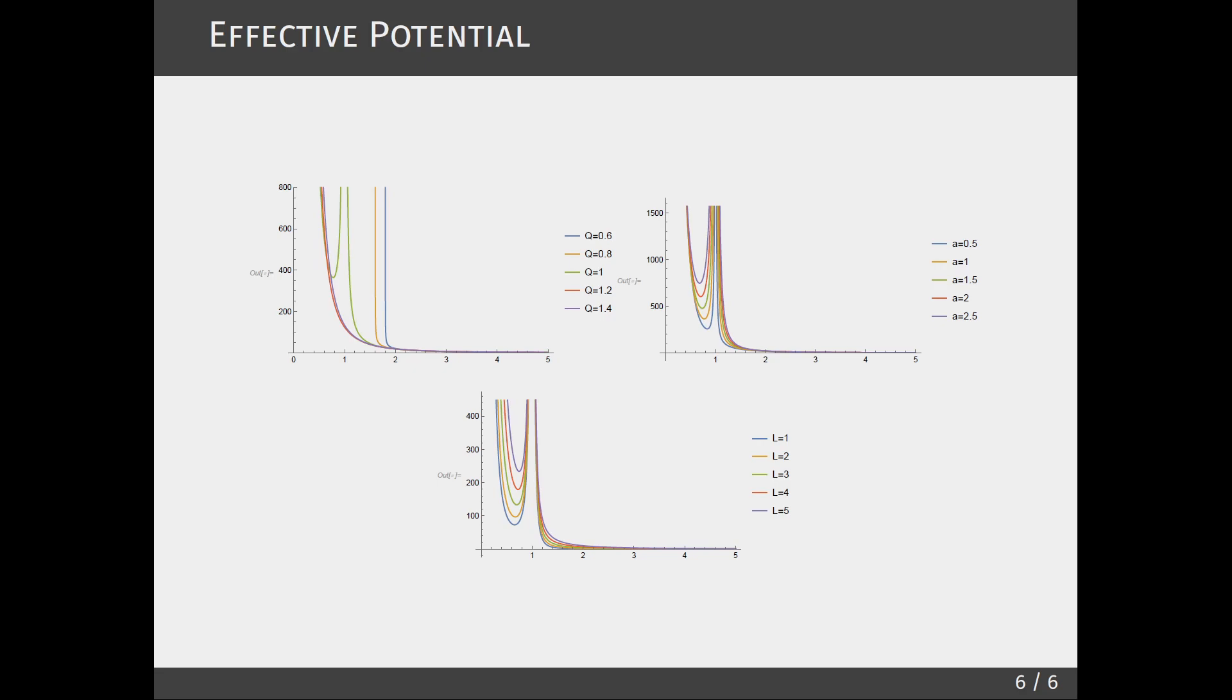As we can see, the values of a and L don't much affect the shape of the effective potential plot, just the scale. But when Q is altered, we can see a qualitative change. When Q equals one, the effective potential rises to infinity.